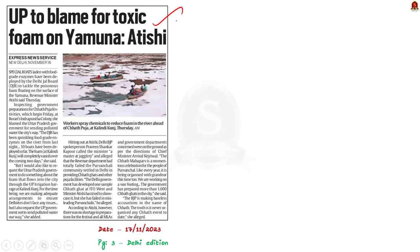This news article talks about the frothing in Yamuna River. Every year around Chhath Puja, a layer of froth floats over parts of the Yamuna River near Kalindi Kunj. To tackle the poisonous foam, special boats filled with food-grade enzymes have been deployed by the Delhi Jal Board (DJB). Today, let us understand why the frothing happens, what it is constituted of, and what can be done to solve the issue.